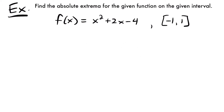All right, welcome back. Let's start with this example. We have find the absolute extrema for the given function on the given interval, for the function x squared plus 2x minus 4 on the interval from negative 1 to 1.